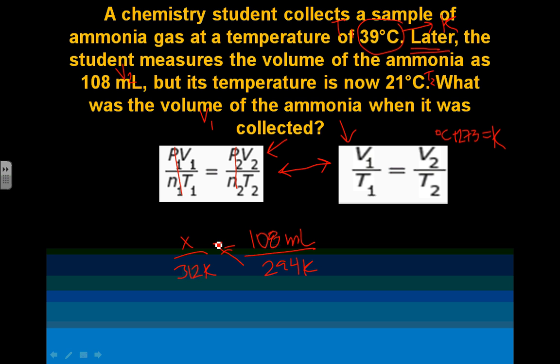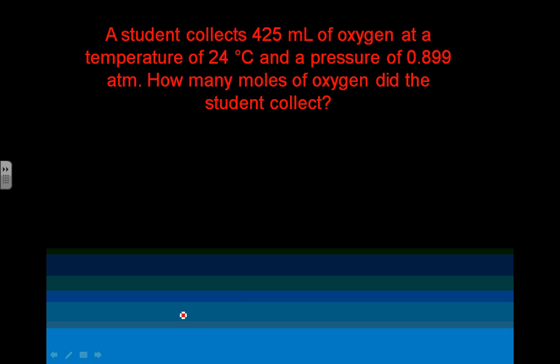Well, you're going to cross-multiply to solve for X. I'm not going to do the whole algebra here, but your answer should be 115 milliliters. Three sig figs. Piece of cake. Let's do one more problem.